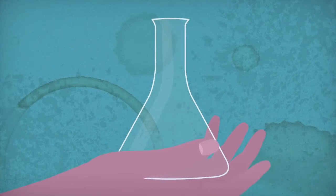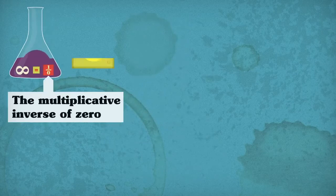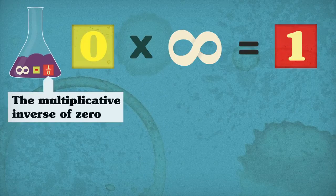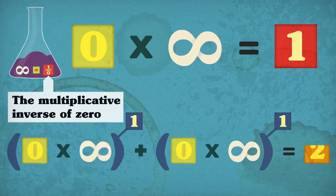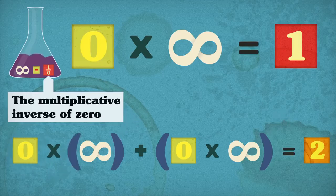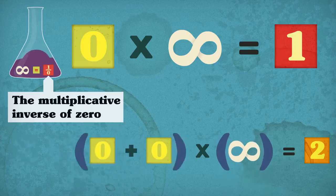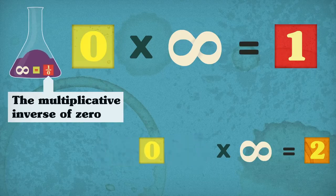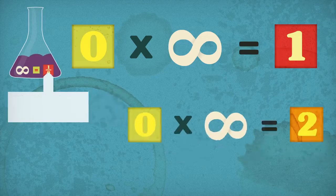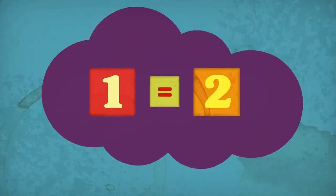Let's try it, imagining we don't know anything about infinity already. Based on the definition of a multiplicative inverse, 0 times infinity must be equal to 1. That means 0 times infinity plus 0 times infinity should equal 2. Now, by the distributive property, the left side of the equation can be rearranged to 0 plus 0 times infinity. And since 0 plus 0 is definitely 0, that reduces down to 0 times infinity. Unfortunately, we've already defined this as equal to 1, while the other side of the equation is still telling us it's equal to 2. So, 1 equals 2.